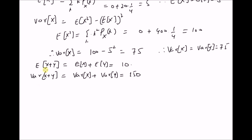And obviously, the covariance of X and Y — that is, expectation of (X minus expectation of X) times (Y minus expectation of Y) — is equal to 0, since X and Y are independent random variables.